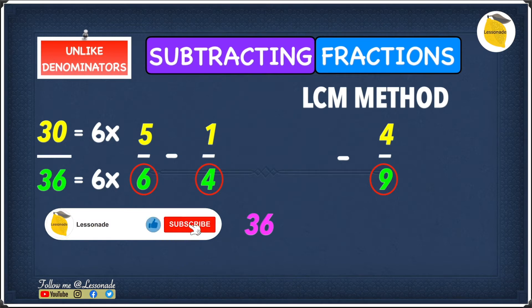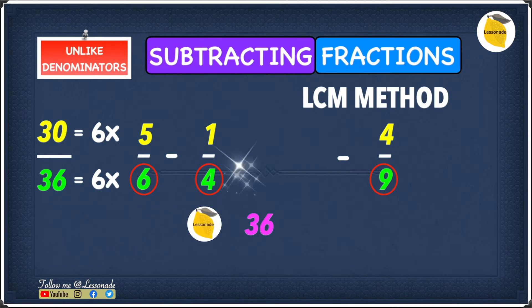Now let's move on to 1 over 4. 4 goes into 36 nine times, so 4 times 9 is 36. We have to do the same thing to the top number because what you do to the bottom number you have to do to the top number, so now we have 1 times 9 at the top. We know that 1 times 9 is 9, which means we get 9 over 36 for 1 over 4.